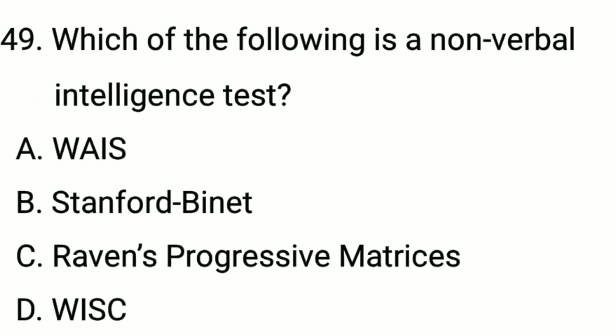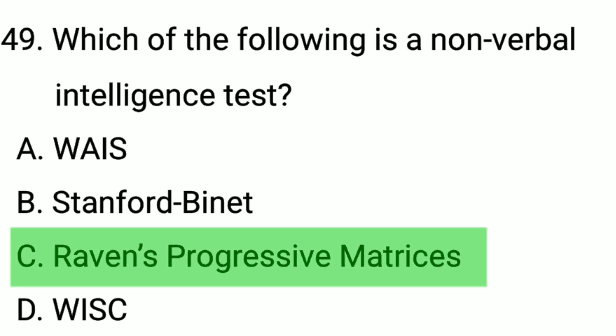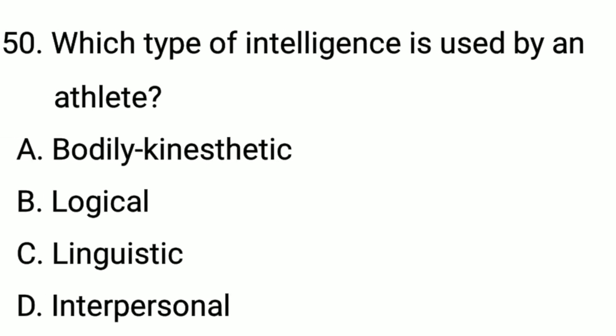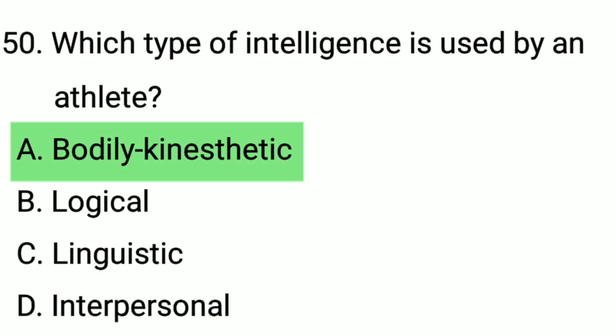Q49. Which of the following is a nonverbal intelligence test? The correct option is option C: Raven's Progressive Matrices. Q50. Which type of intelligence is used by an athlete? The correct option is option A: bodily-kinesthetic intelligence.